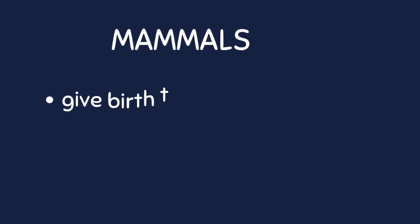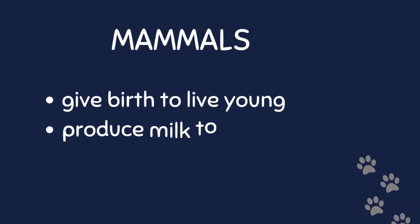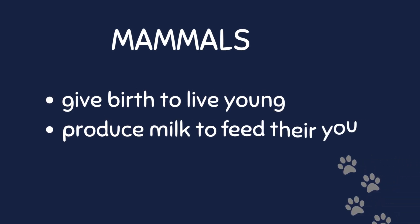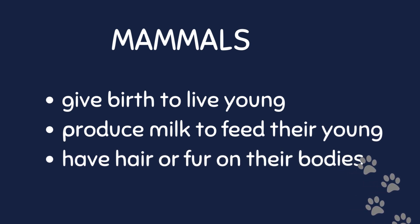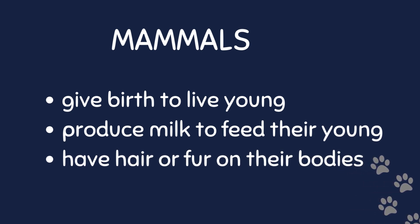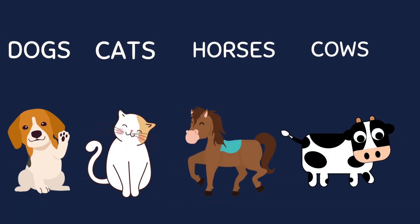Mammals are a group of animals that give birth to live young, produce milk to feed the young, and have hair or fur on their bodies. Some common examples of mammals include dogs, cats, horses, and cows.